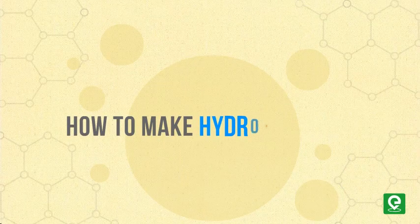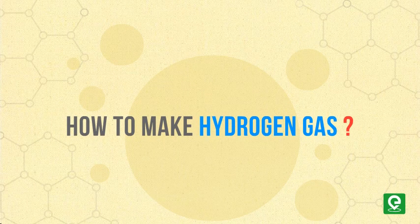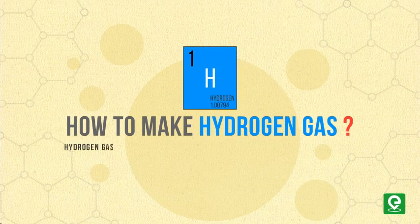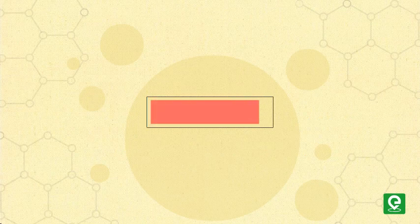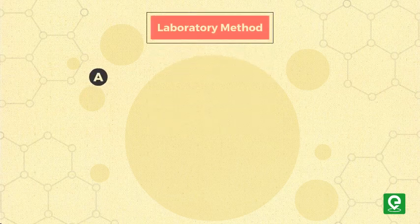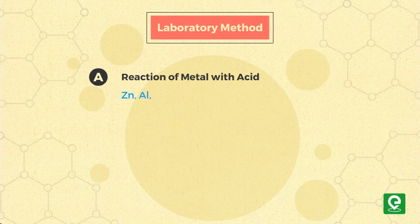How to make hydrogen gas. Hydrogen gas is produced in laboratory and industry using several methods. Let us first look at the different methods of producing hydrogen gas in the laboratory.